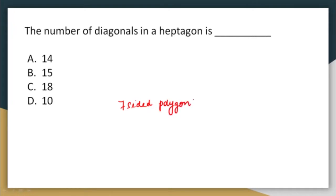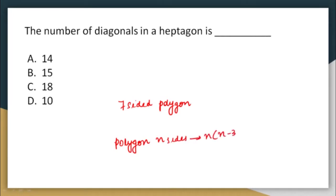If I have a polygon which has n sides, the number of diagonals in the polygon is n × (n − 3) / 2. This is the number of diagonals in the polygon, where n represents the number of sides.